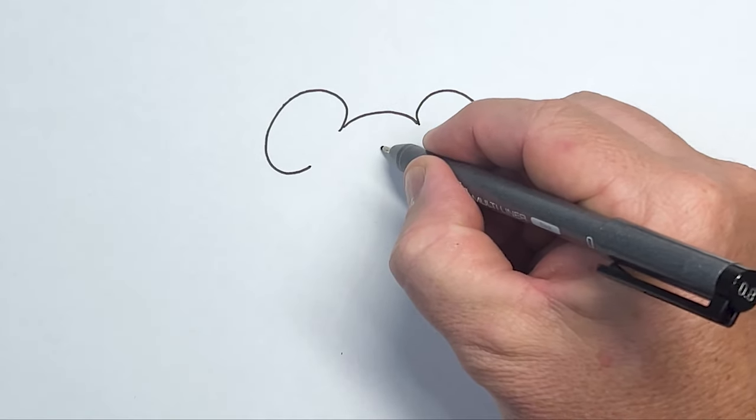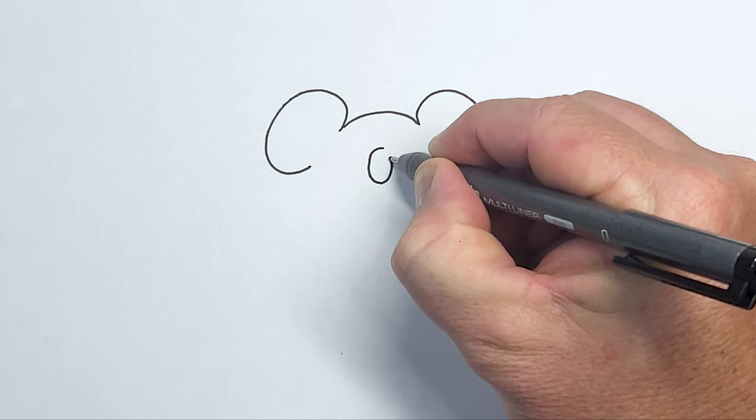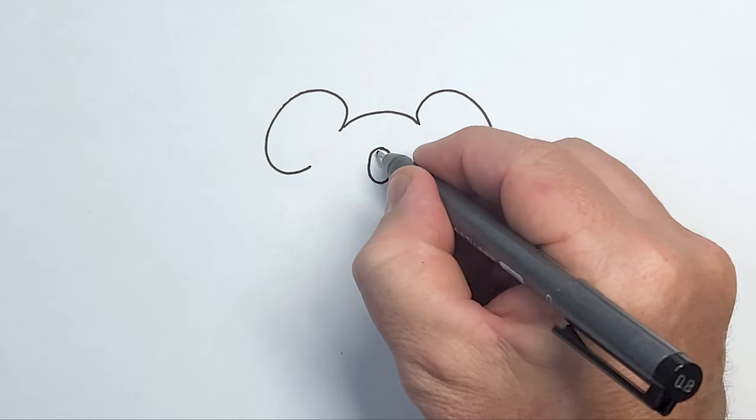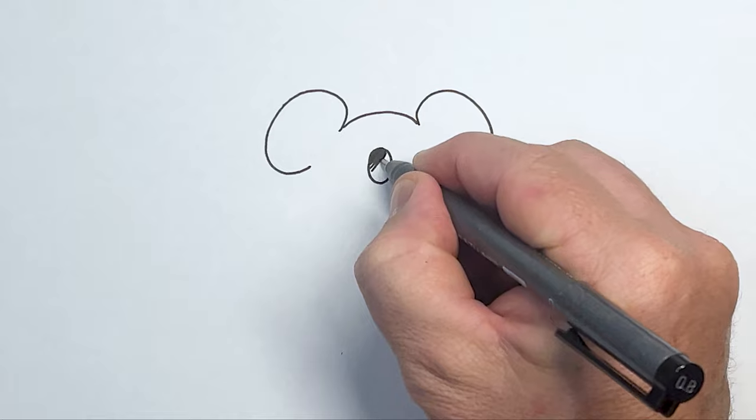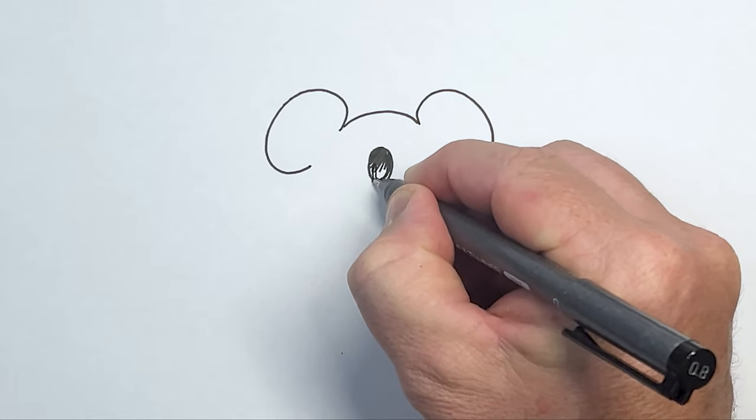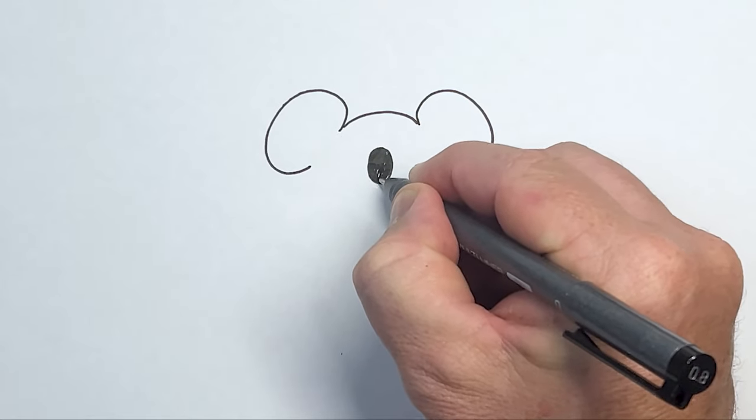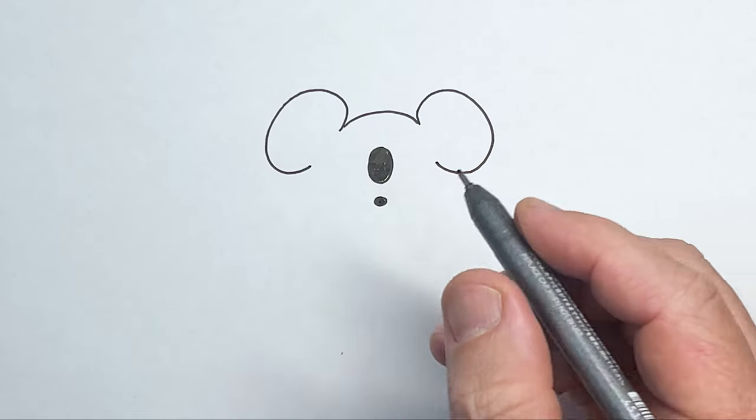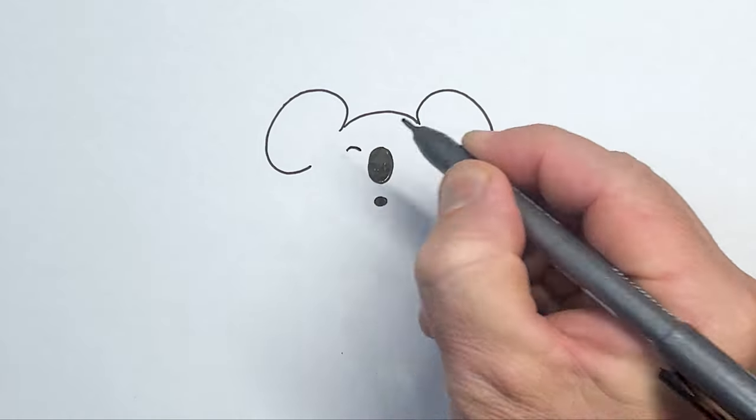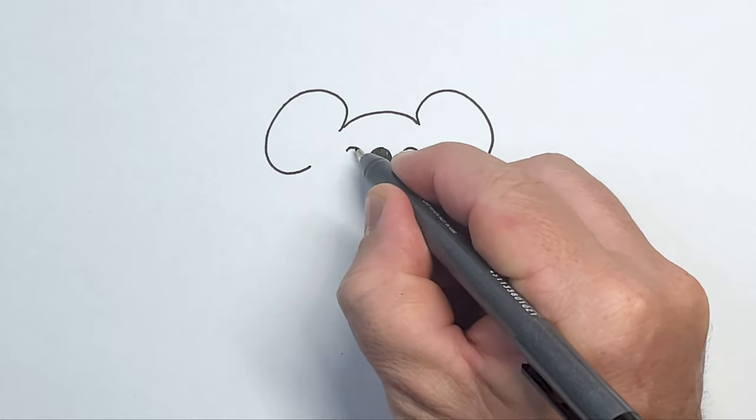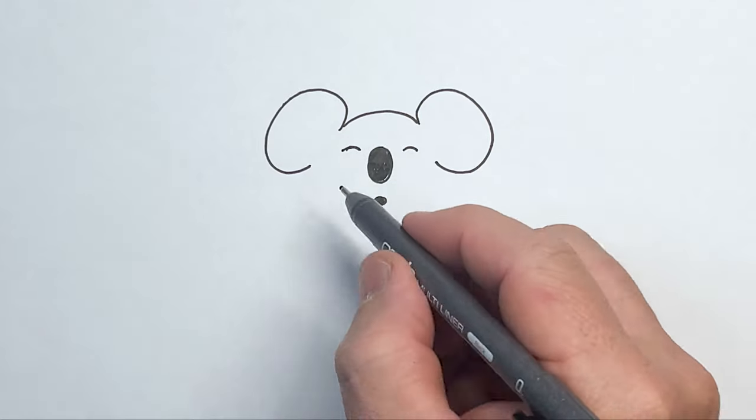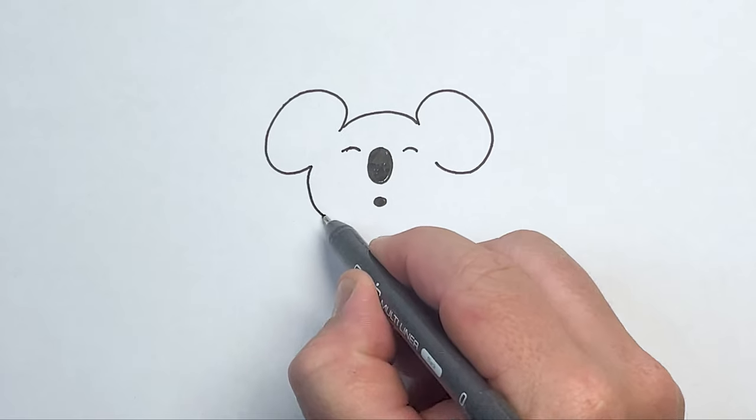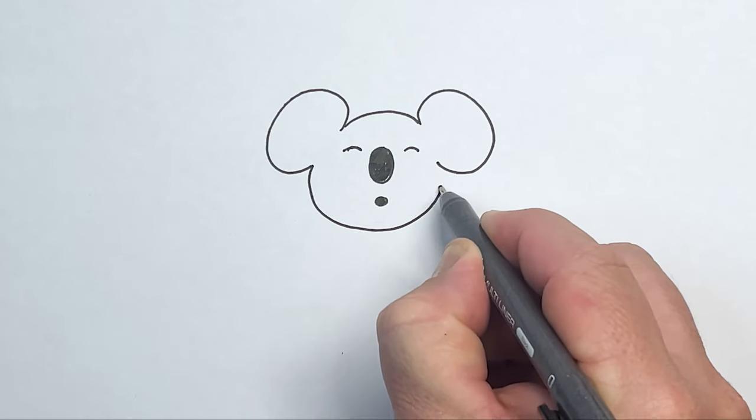I'm going to put the nose on, so an oval shape and I'm going to color that in. Now this koala is going to be hugging a love heart. So I'm going to open mouth, closed eyes, one, two curved lines like so, and then I'm going to bring the head back down and around like this.